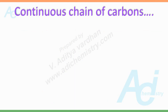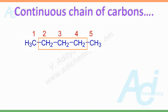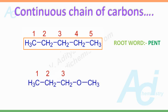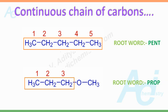Let us understand what is the meaning of a continuous chain of carbons. Look at this carbon chain which contains 5 carbon atoms connected in a continuous manner. This is the parent chain with 5 carbon atoms and hence the root word is pent. However, look at this carbon chain — here only 3 carbons are connected continuously. Hence this is the parent chain and the root word must be prop, whereas the OCH3 group is considered as a substituent on the parent chain.